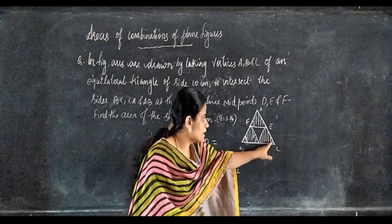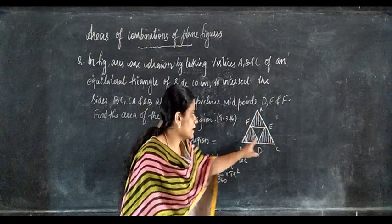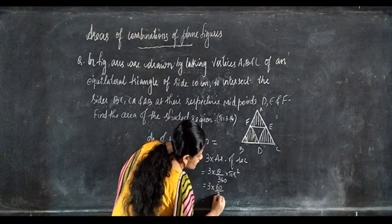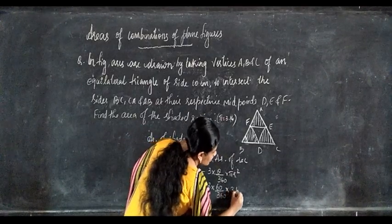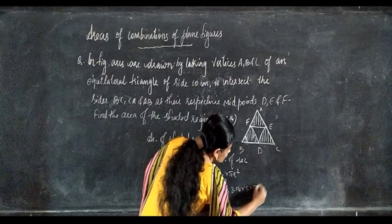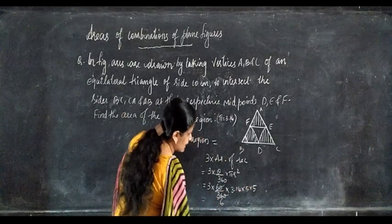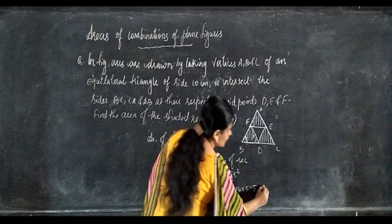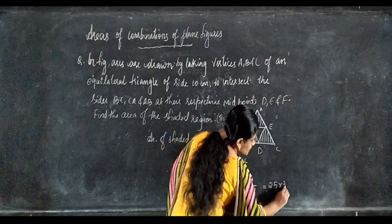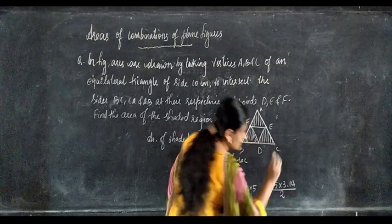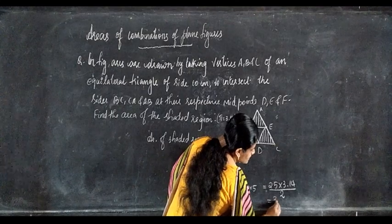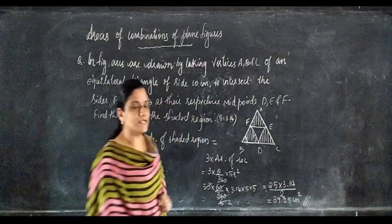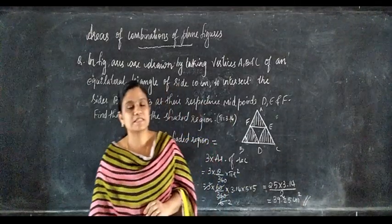Substituting: 3 into 60 by 360 into 3.14 into 5 into 5. Cancel 60 by 360 to get 1 by 6, then 3 and 6 cancel to give 1 by 2. So: 25 into 3.14 divided by 2, which gives 39.25 centimeters square. Therefore, area of the shaded region equals 39.25 centimeters square.